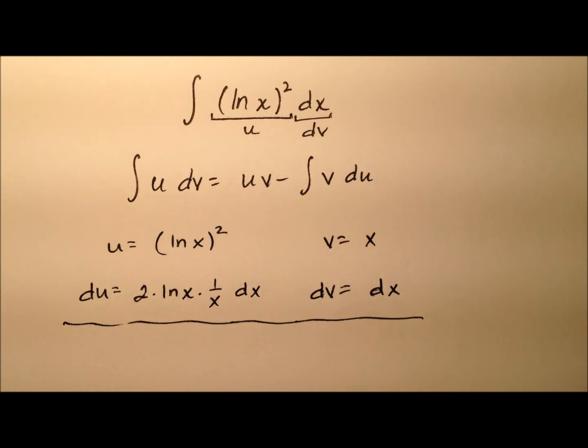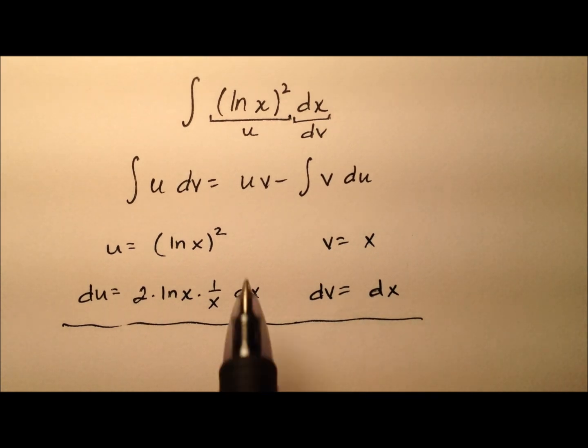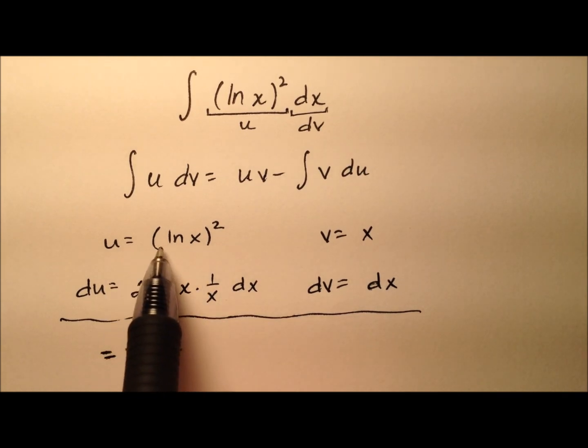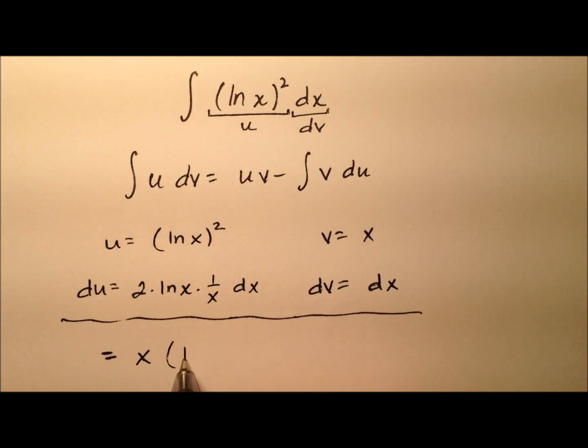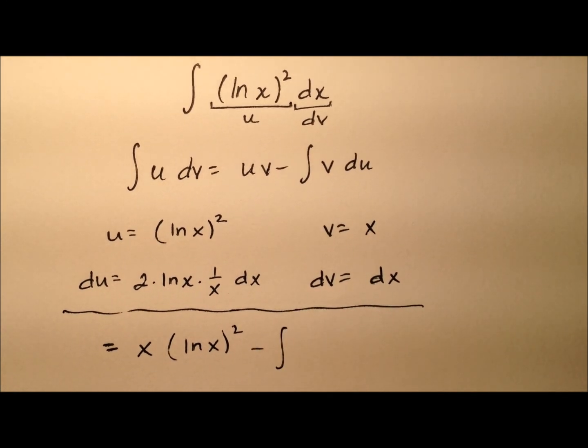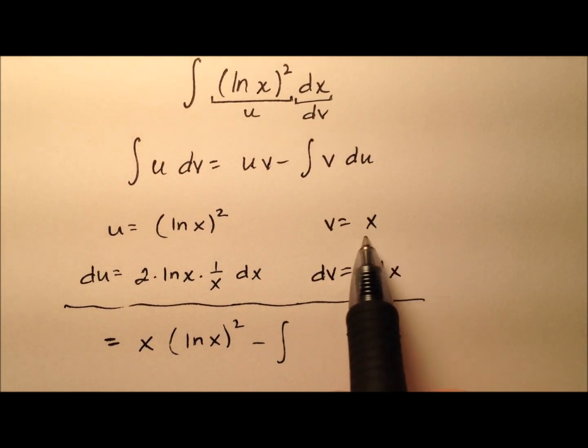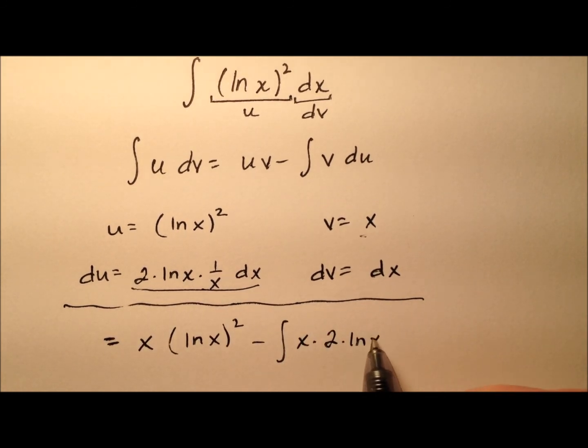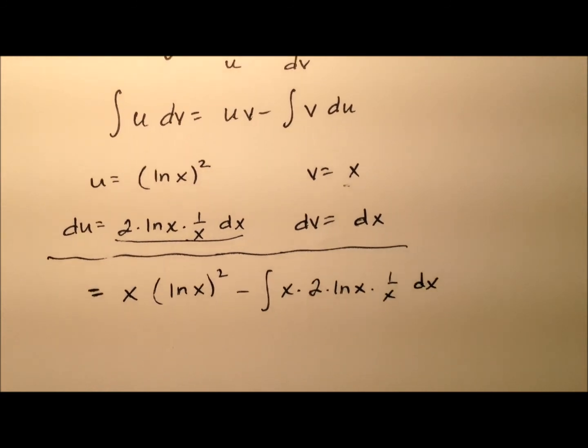So now that we know all of our information, let's go ahead and plug into the formula. u times v is going to be x times the square of the natural log of x minus the integral of vdu. So x times and then all of this: 2 times the ln of x times 1 over x times dx.